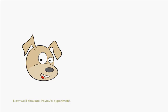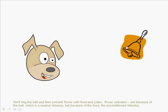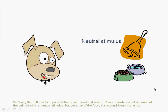Next, we'll simulate Pavlov's experiment. We'll ring the bell and then present Rover with food and water. Rover salivates, not because of the bell, which is a neutral stimulus, but because of the food, the unconditioned stimulus.